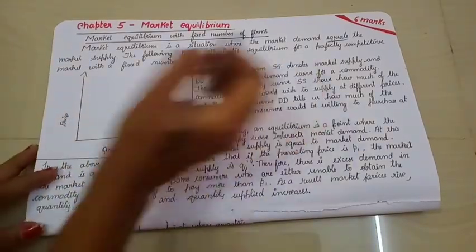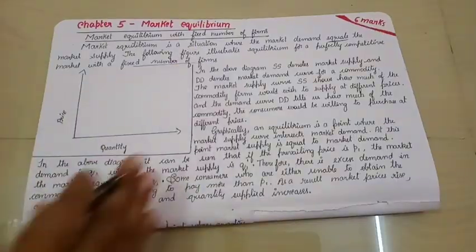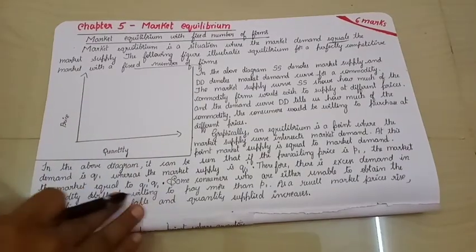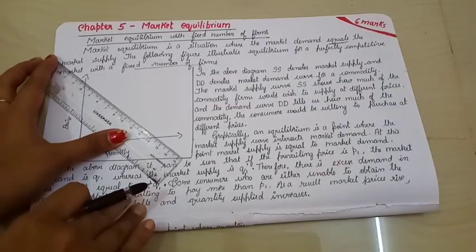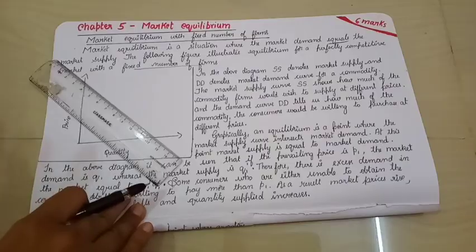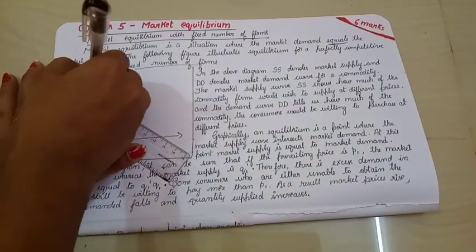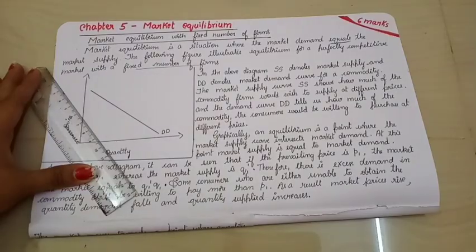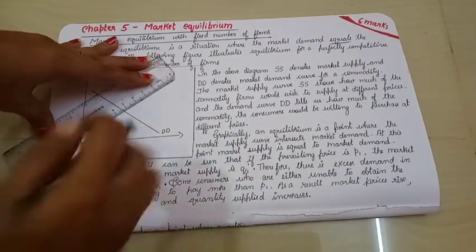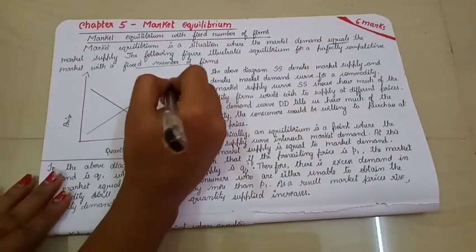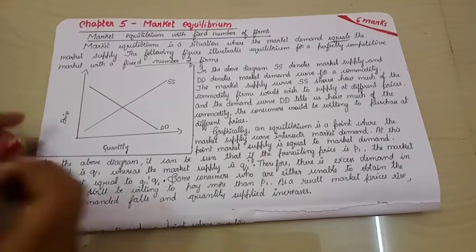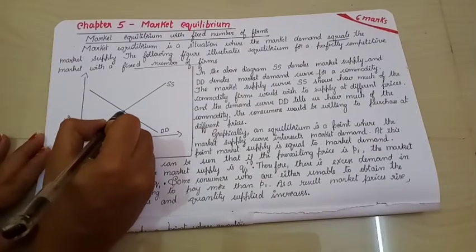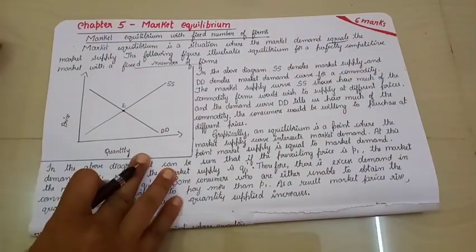The following figure illustrates the equilibrium for a perfectly competitive market with a fixed number of firms. This is our x-axis and y-axis. Here we plot the quantity and price. First, what you have to draw here is the demand curve. Market demand is a downward sloping curve. This is our market demand, I will name it as DD. How is the supply curve? Supply curve will be the dead opposite of the demand curve. This is my supply curve.